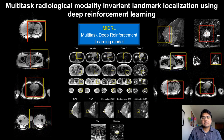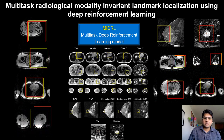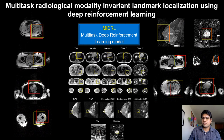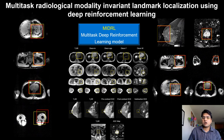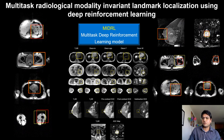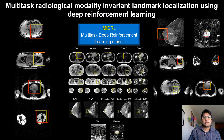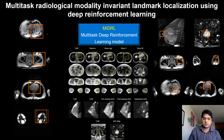These excellent preliminary results demonstrate the potential of developing a universal deep reinforcement learning framework for anatomical localization across the entire body.